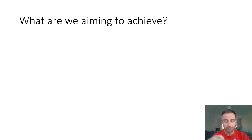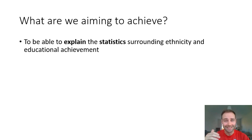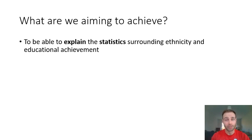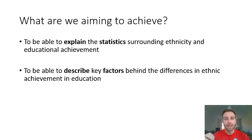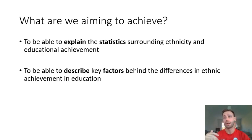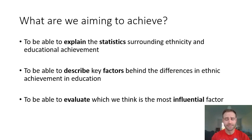In today's session we're going to try and achieve three things. The first is to be able to explain the statistics surrounding ethnicity and educational achievement — these are the facts, the quantitative data showing there is a difference between groups. Secondly, we need to describe the key factors behind those differences. There are four main factors we'll look at today, and you need to describe each of them and their criticisms. The final skill is evaluation — deciding which is the most influential factor — a really key skill for GCSE Sociology.